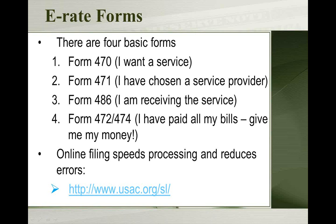After you post Form 470, service providers will contact you saying they can provide what you need. You then pick one and tell USAC with Form 471 which service and provider you've chosen. The third form, Form 486, lets USAC know that service has actually started. Since the funding year doesn't start until July, you're making these choices and submitting forms now before that funding year begins. The final forms — 472 or 474, also called the BEAR forms — are the invoicing forms where you tell USAC your bills are paid and request your discount. You don't get any money until that fourth form is done.